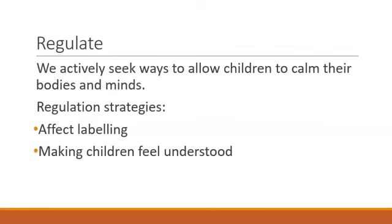We then move on to our third element: regulate. At school, we're actively seeking ways to allow children to calm their bodies and minds. We see our role as co-regulators — in order for children to be able to self-regulate, we need to give them the skills to do that. One regulation strategy we use is affect labelling, which is quite simply finding words for feelings, especially for younger children who might be feeling a particular emotion but don't know the word to describe it. Evidence shows that by being able to name and label emotions, it has regulating effects on our emotions.